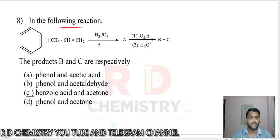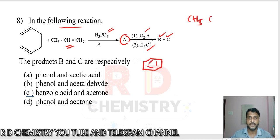Question number eight: In the following reaction, benzene and propene, there is phosphoric acid to give compound A, then oxygen and acetate are used to give B and C. Benzene is treated with CH2=CH-CH3. There is a protonation taking place. Phosphoric acid donates its proton to the alkene like Markovnikov's rule.